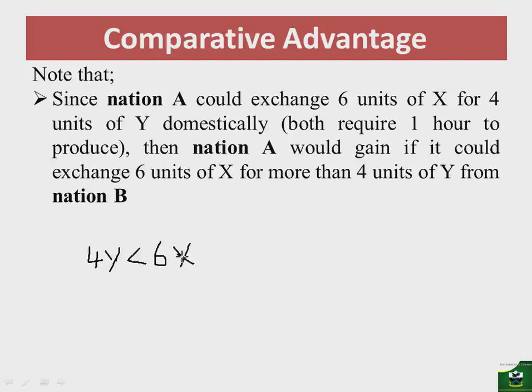In other words, the more units of Y nation A gets, the better. Nation A will still be okay as long as the other commodity is on the advantage side, meaning the lower boundary is defined as 4Y less than or equal to 6X. We then need to define the upper boundary.